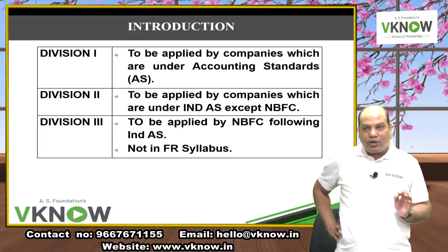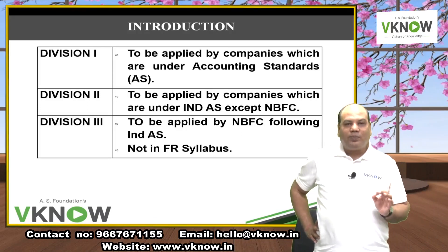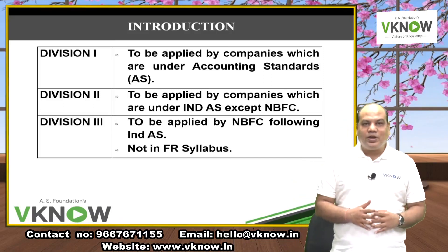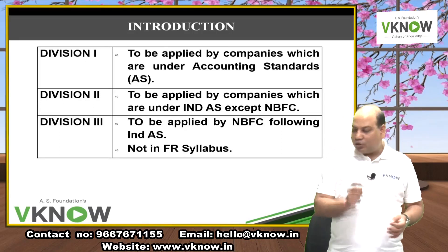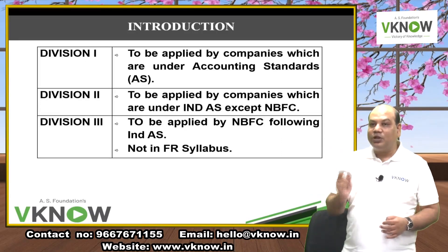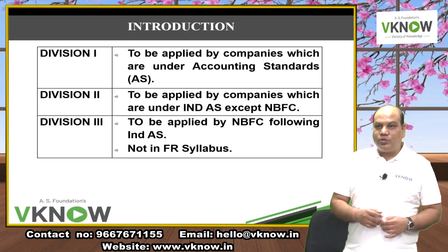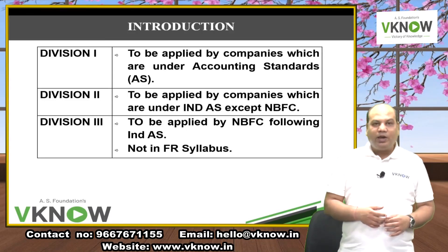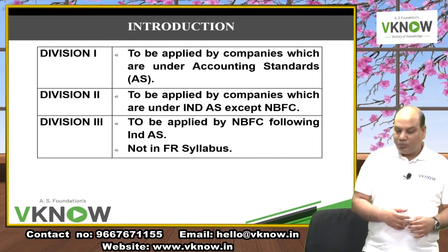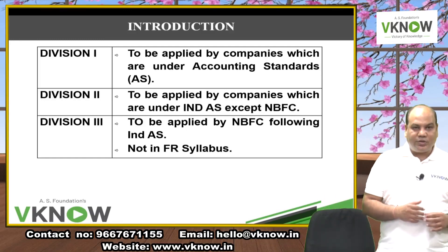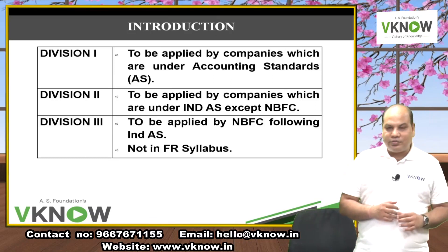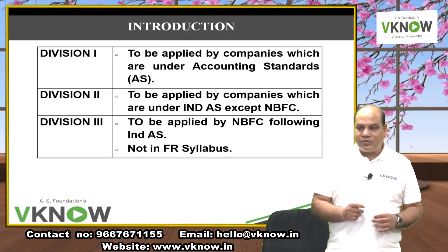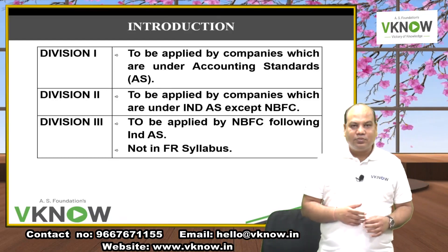Division 1 applies to companies under Accounting Standards — the non-Ind AS companies. This is what you studied in IPCC, Intermediate, and college. Division 2 is to be applied by companies which are under Ind AS, except NBFC.